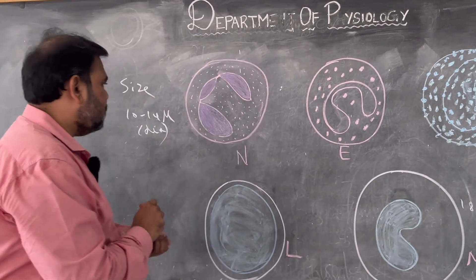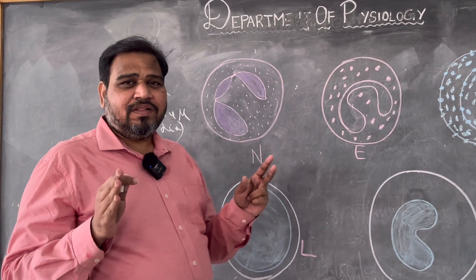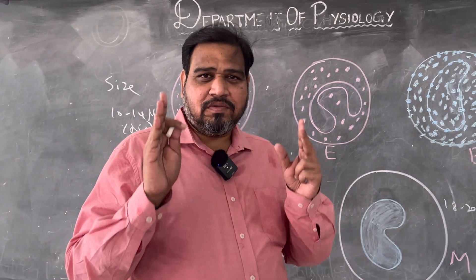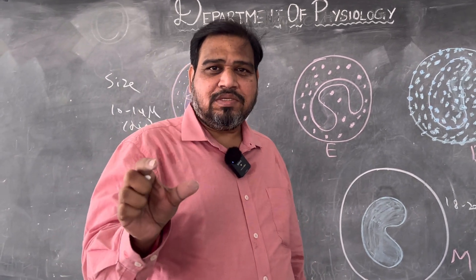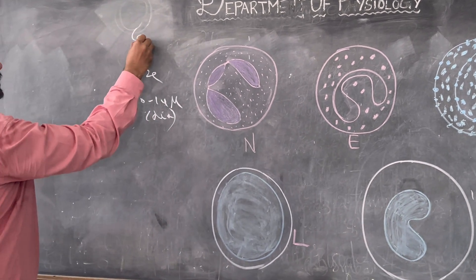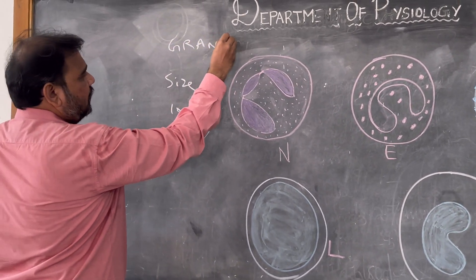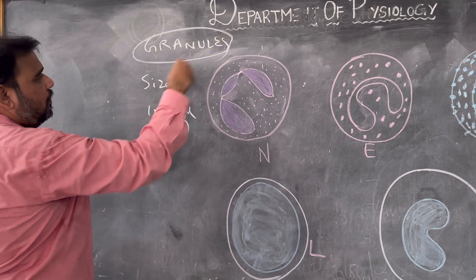The main thing which you want to concentrate: if they ask how will you identify whether this is neutrophil or eosinophil or basophil, the immediate point which you have to say is granules. So please concentrate, it is all based upon granules.